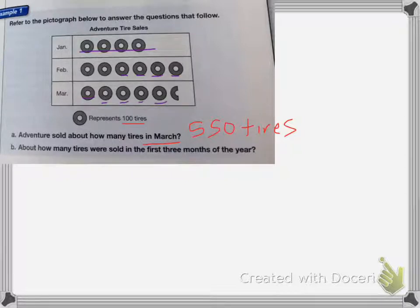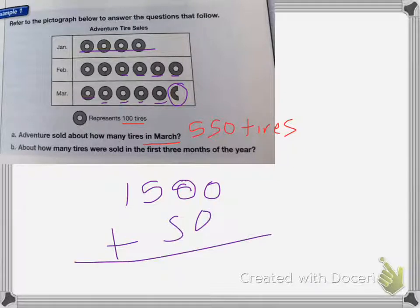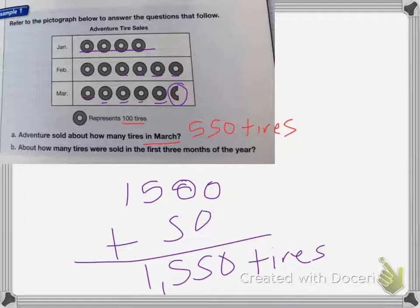15 whole tires. So that's going to be 15 times 100, which is 1,500, plus that half a tire, which is 50. So 1,500 plus the 50 tires. There's going to be 1,550 tires sold in the first three months.